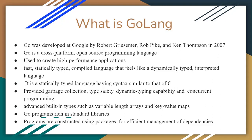Go is a statically typed language having syntax similar to that of C programming language. Go provides garbage collection, type safety, dynamic typing capability, and concurrent programming. Go is advanced with built-in types such as variable-length arrays and key-value maps. Go programs are rich in standard libraries, and programs are constructed using packages for efficient management of dependencies.